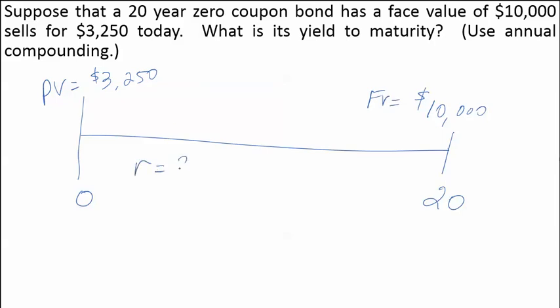We want to know the discount rate such that the present value of $10,000 is $3,250. Because we are assuming annual compounding, that will be the yield to maturity of the zero-coupon bond. There are no coupon payments because it's a zero-coupon bond.